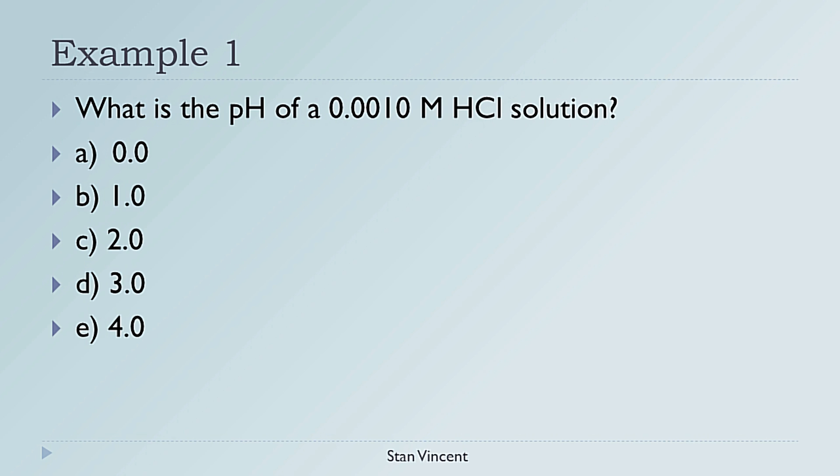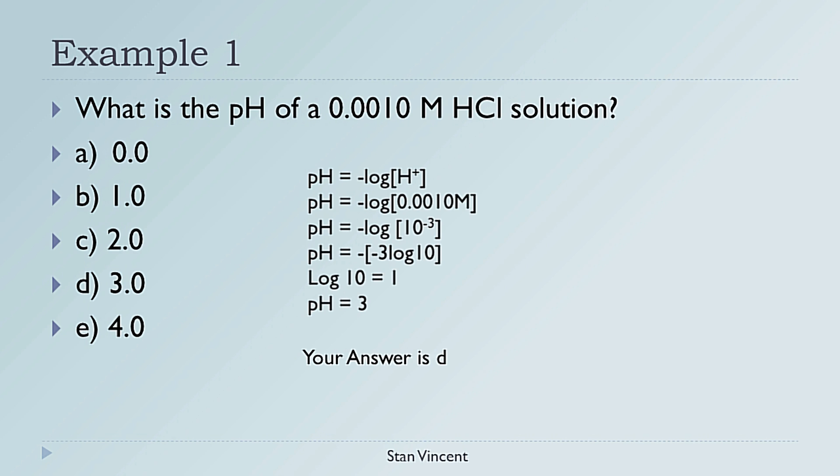Determine the pH using the equation pH = -log[H+]. Replace the value of H+ in the above equation with 0.001 or 10 to the power of -3. Use your calculator to solve the problem. This will give you a value of 3. Therefore, the correct answer is D.